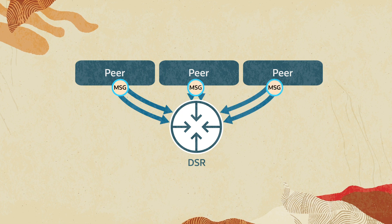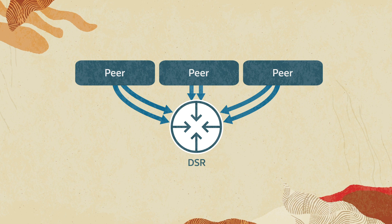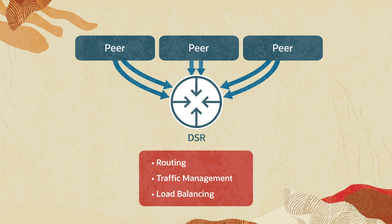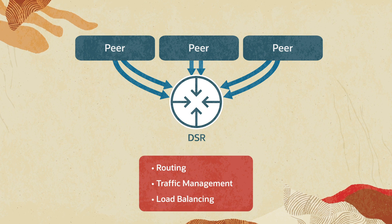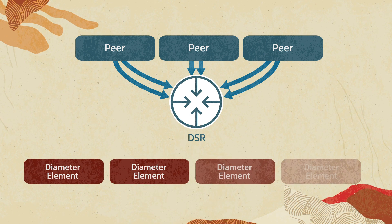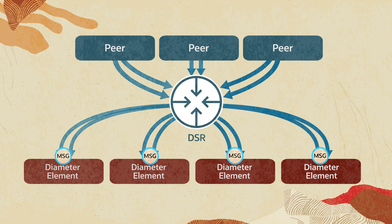DSR creates a centralized core diameter signaling layer that manages LTE, IMS, and 3G diameter endpoints for routing, traffic management, and load balancing tasks, and it provides a single interconnect point to other networks. DSR is deployed as a gateway to route traffic between diameter elements.